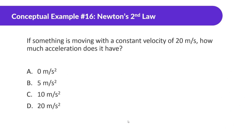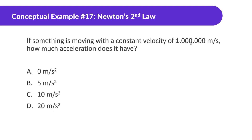If something is moving with a constant velocity of 20 meters per second, how much acceleration does it have? The key thing is constant velocity — if something is moving with constant velocity, its state of motion isn't changing, so the acceleration is zero. Similarly, if something moves at a constant velocity of 1 million meters per second, the acceleration is still zero — it's not changing its velocity.